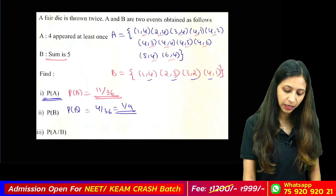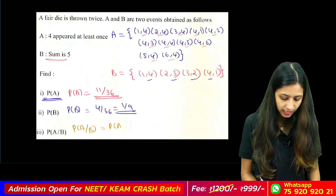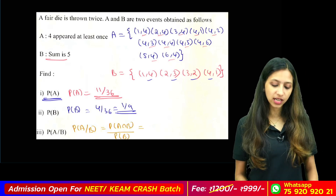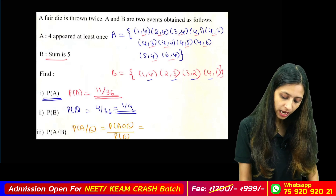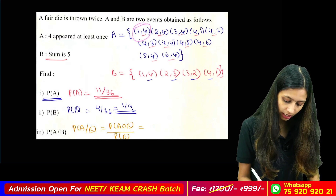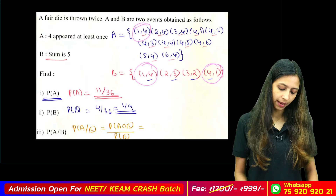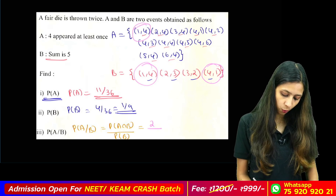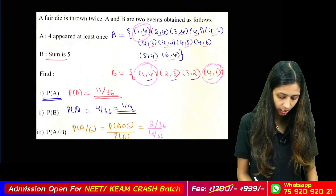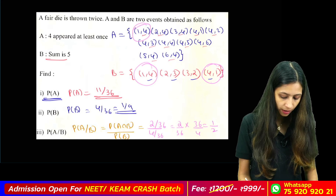P of A given B equals P of A intersection B divided by P of B. A intersection B — the outcomes are: 1,4 and 2,4. So P of A intersection B equals 2 by 36. Then 2 by 36 divided by 4 by 36 equals 2 by 36 multiplied by 36 by 4, which gives 2 by 4.